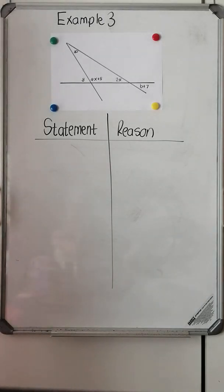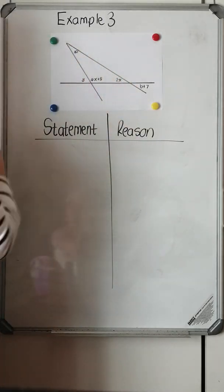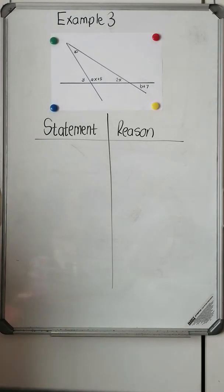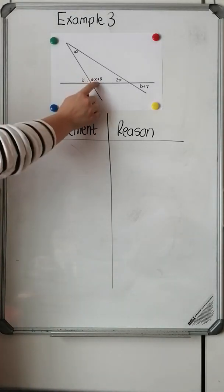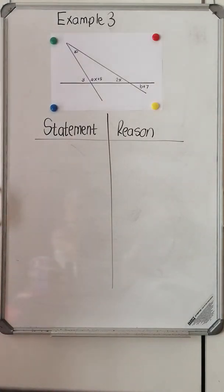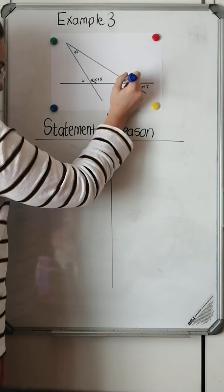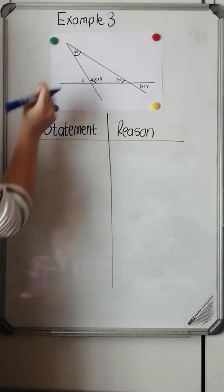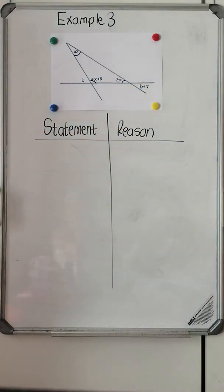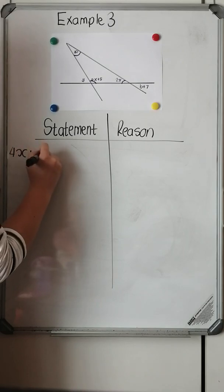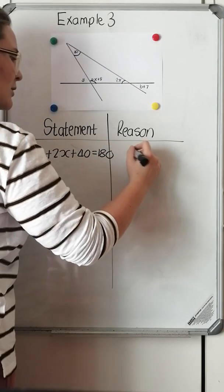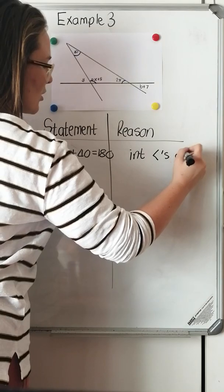For our last example, example three, I see a lot of things going on — a triangle, a straight line, and vertically opposite angles. Let's solve for x first, because our instruction is to solve for x, y, and b. I notice the same variable x in two places, both inside a triangle. So I'll use interior angles of a triangle: 4x plus 8 plus 2x plus 40 should give me 180.